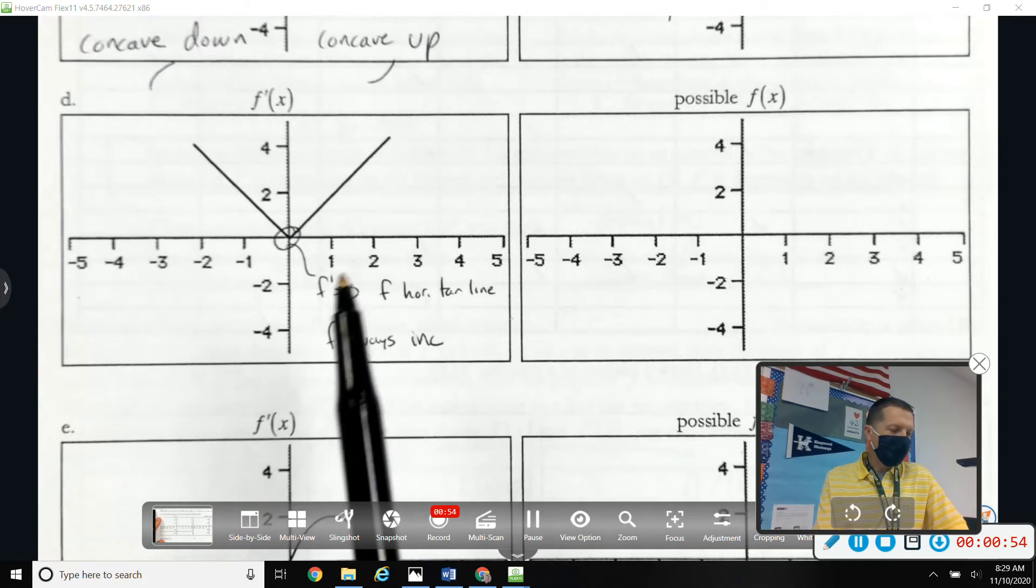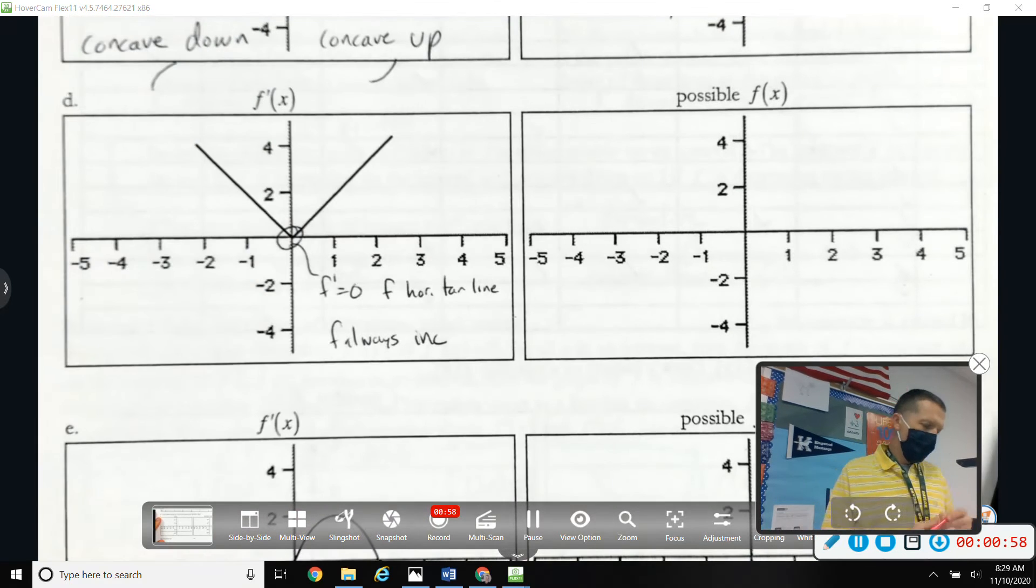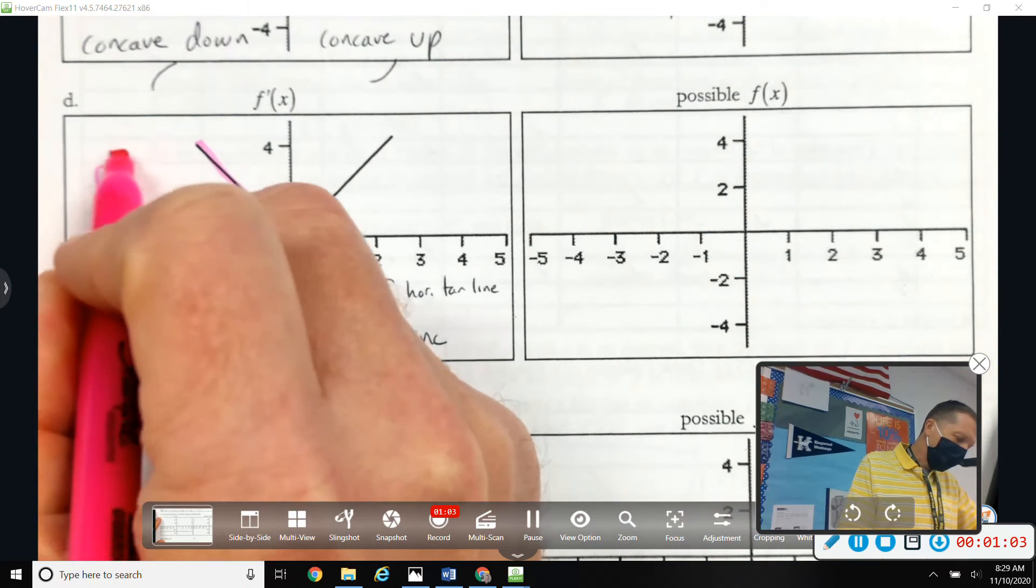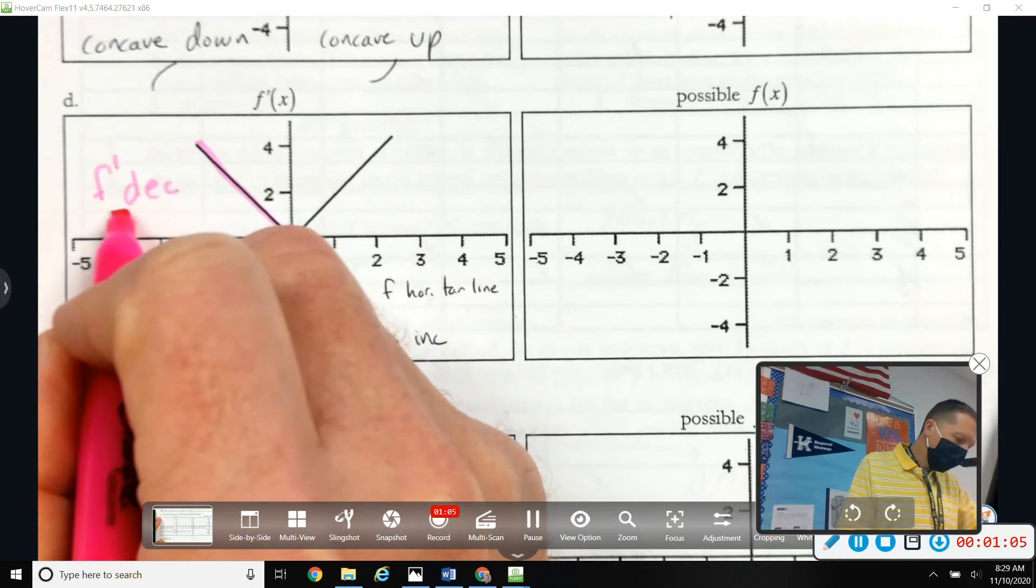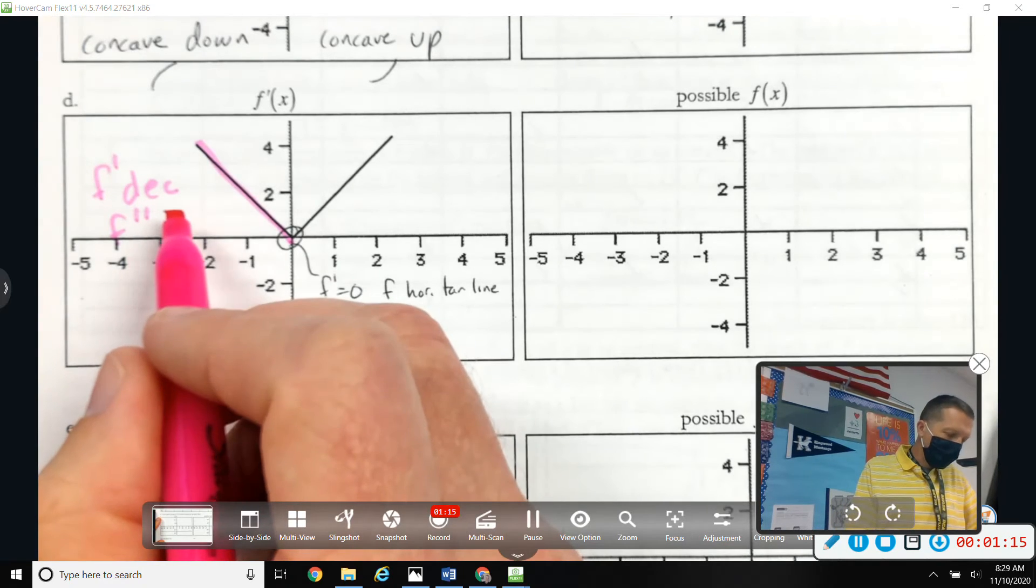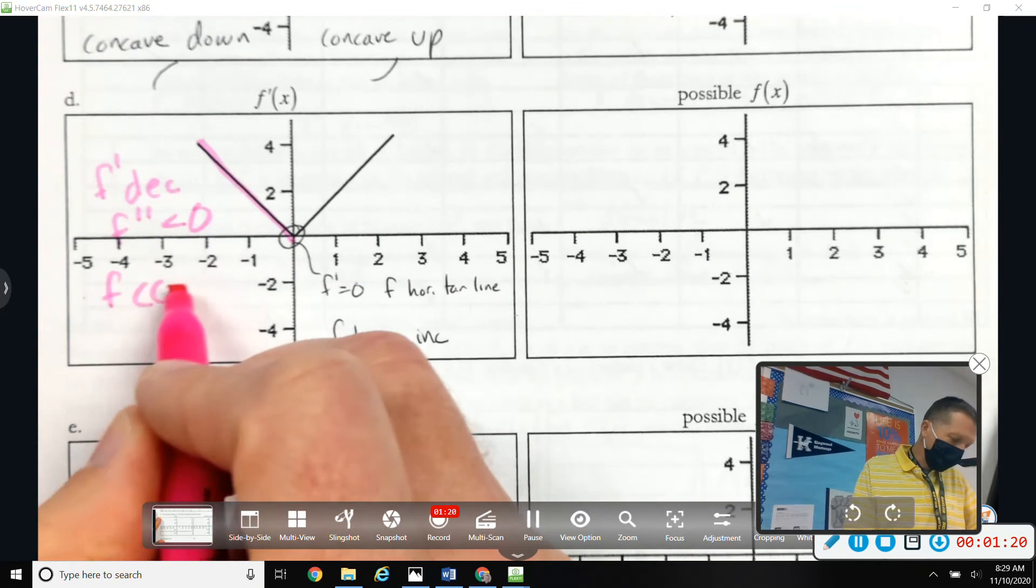What about concavity? That's the other thing we look for. Let's see. So F prime is decreasing. What does that mean about F double prime? If F prime is decreasing, then F double prime is negative, which means F is concave down.